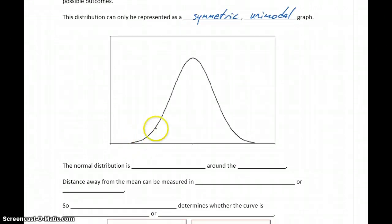Whenever we talk about a symmetric unimodal distribution, we're talking about the normal distribution. It's centered around the mean. If we start right at that peak and trace down to our x-axis, this value right at the center is the mean.